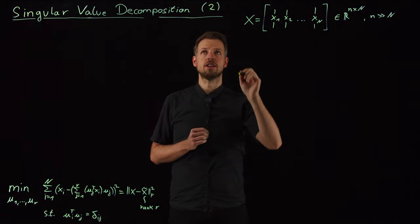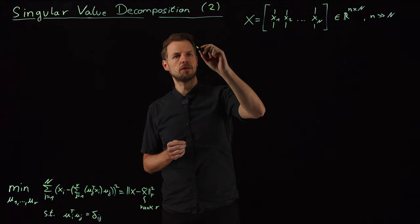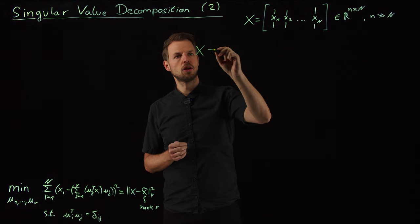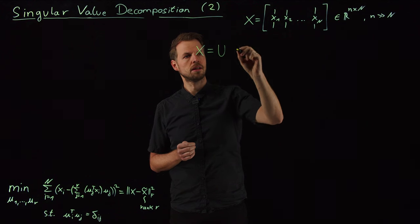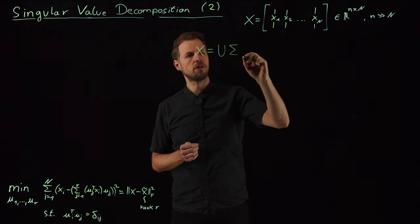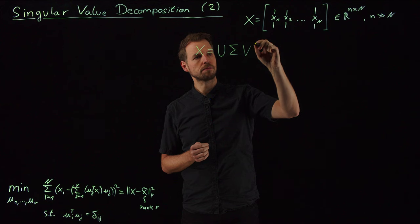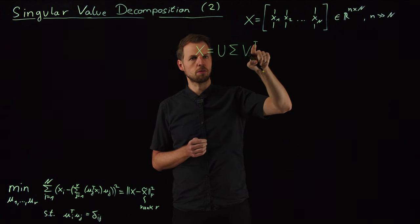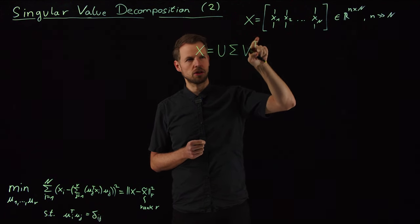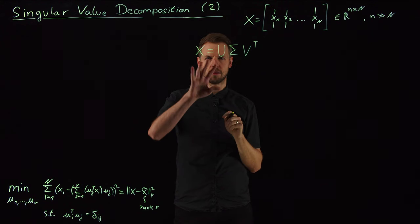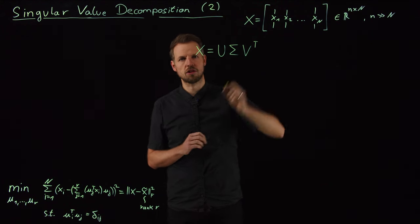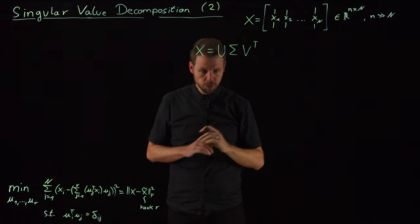And what the singular value decomposition tells us is that this matrix X can be decomposed into a product of three matrices of a very specific structure. And so, this is a transpose. It has to be a complex conjugate transpose in the complex case, but for real numbers, this is just a transpose.